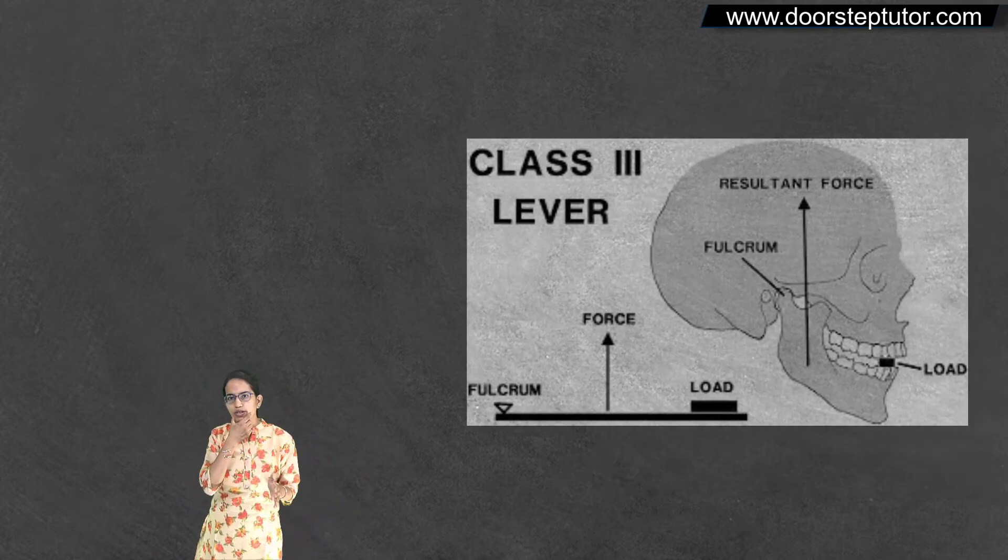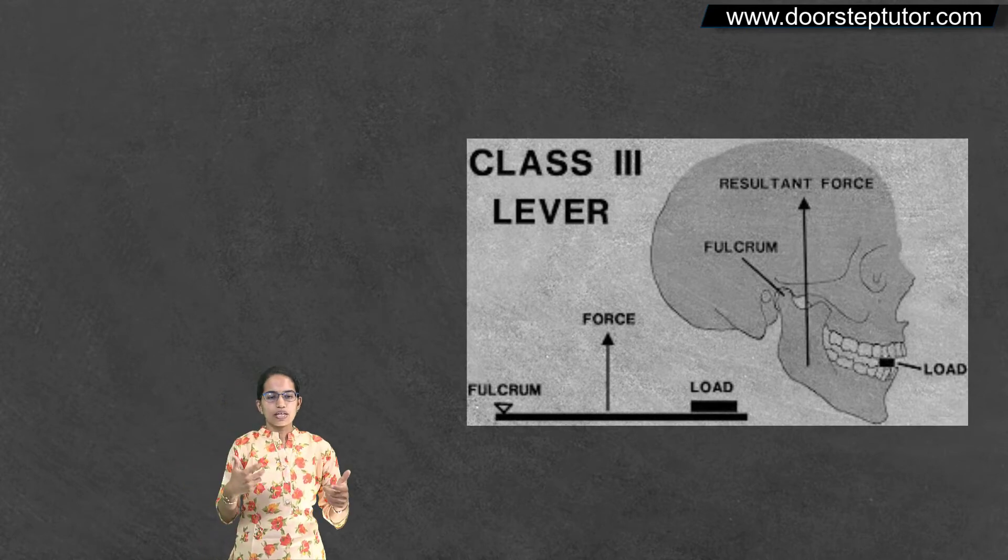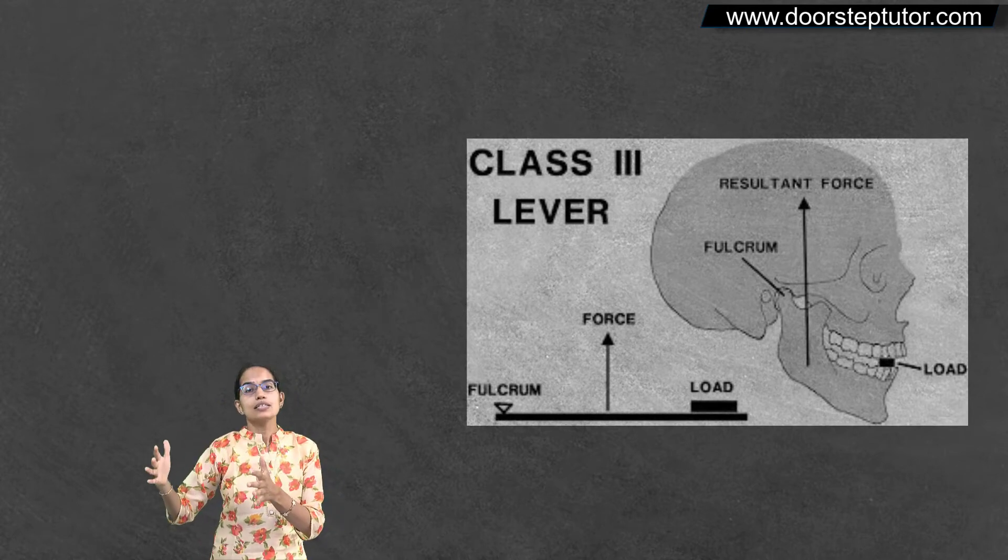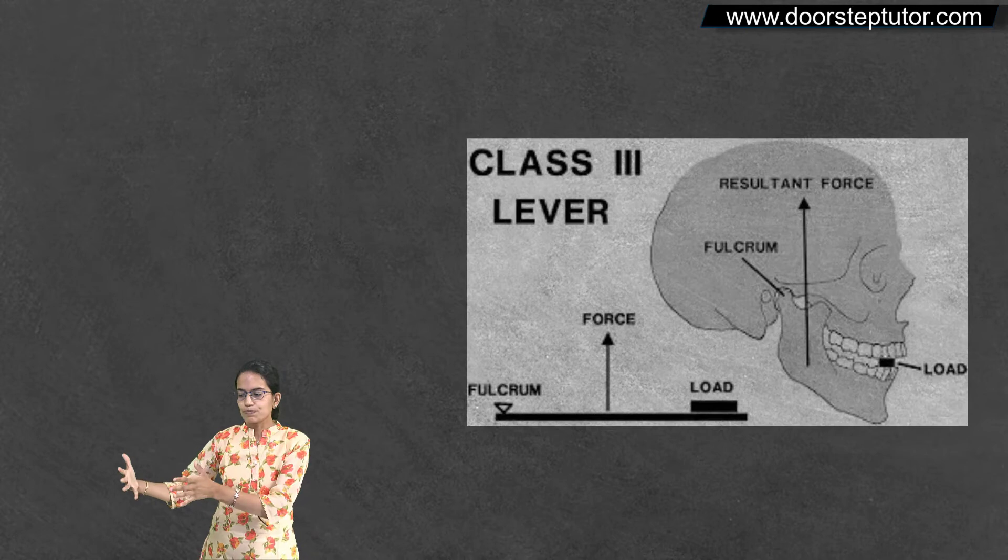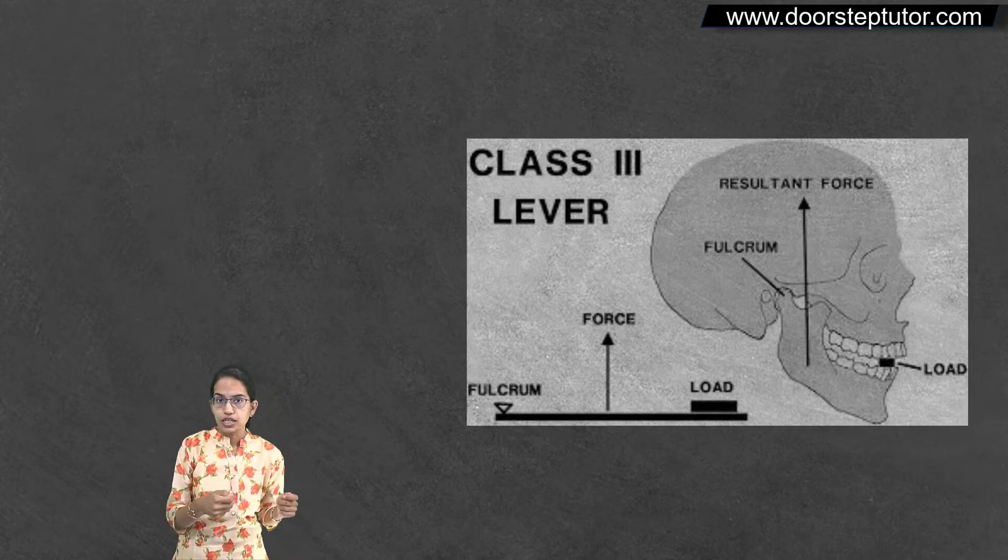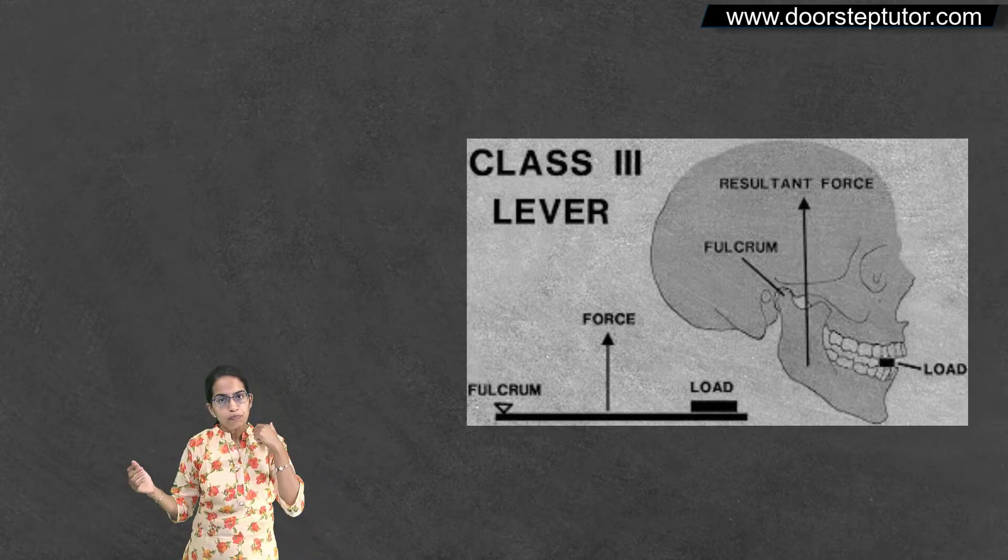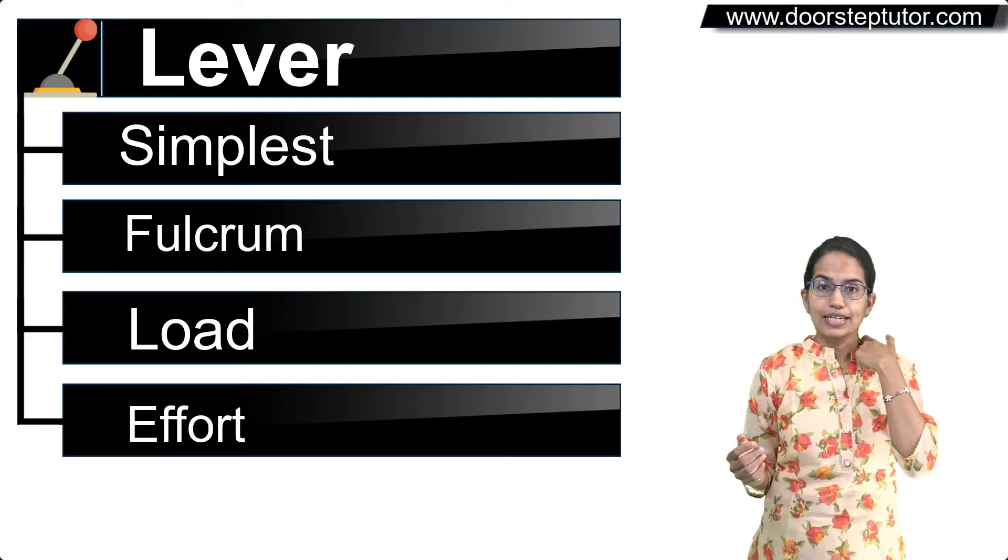Another good example is human jaw, bow and arrow. So these are some of the examples where class 3 lever is explained or where we have effort in the middle of the fulcrum and the load.